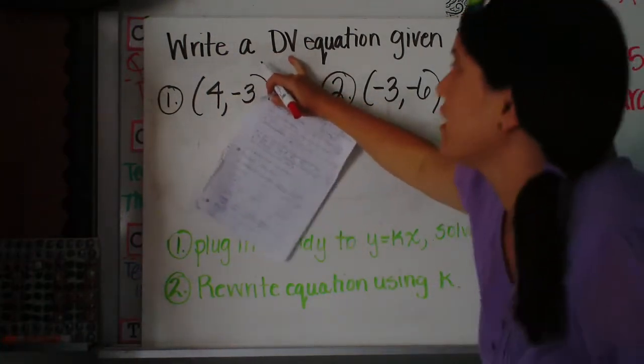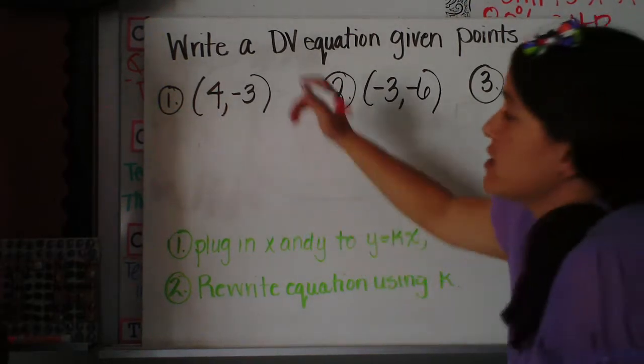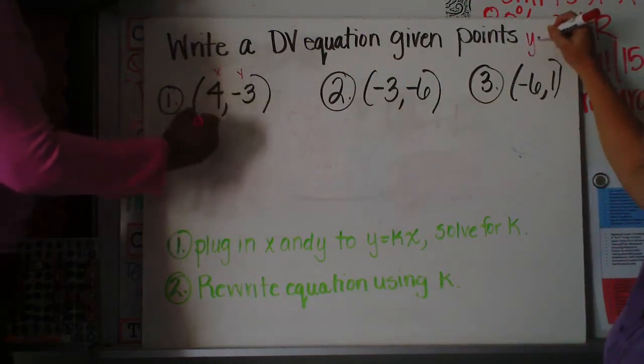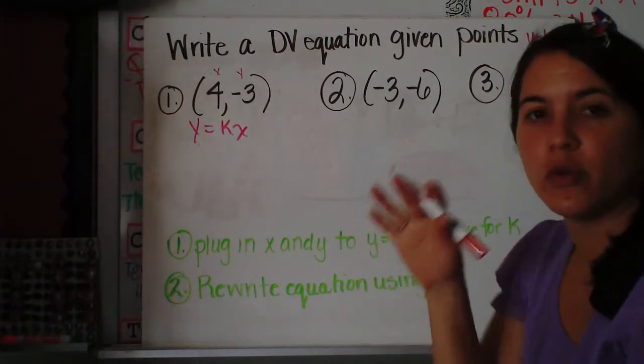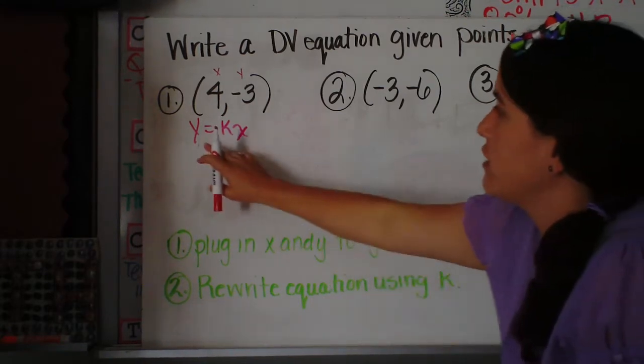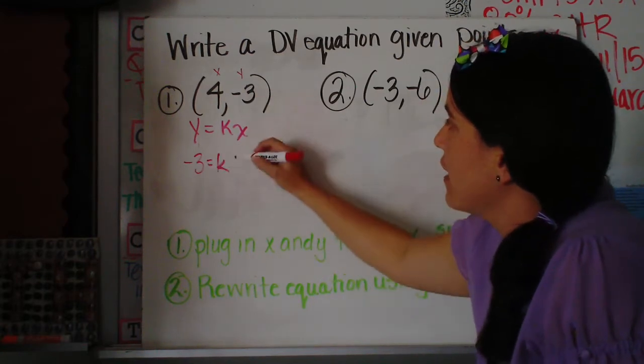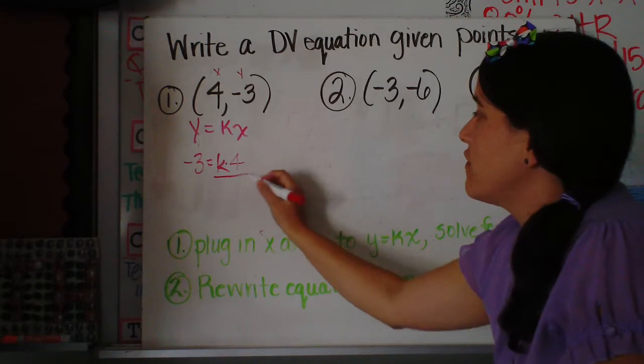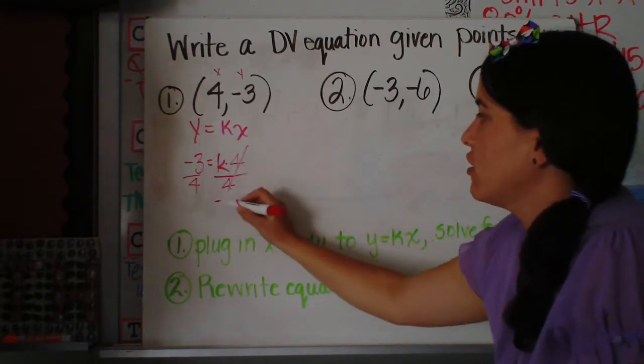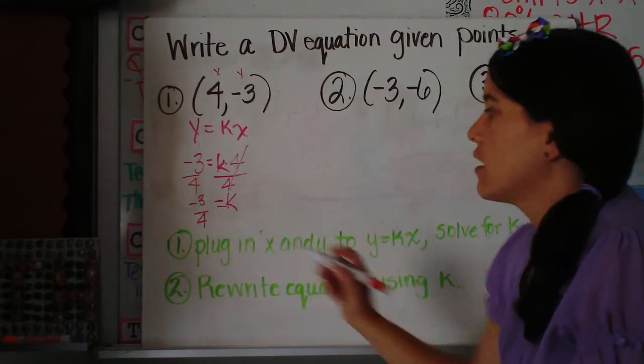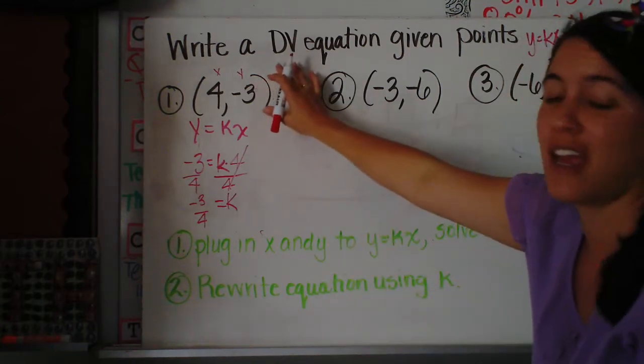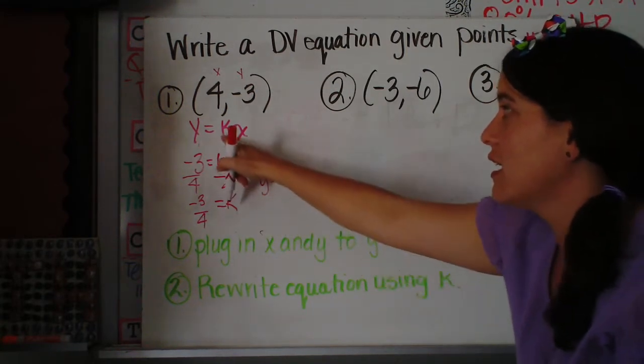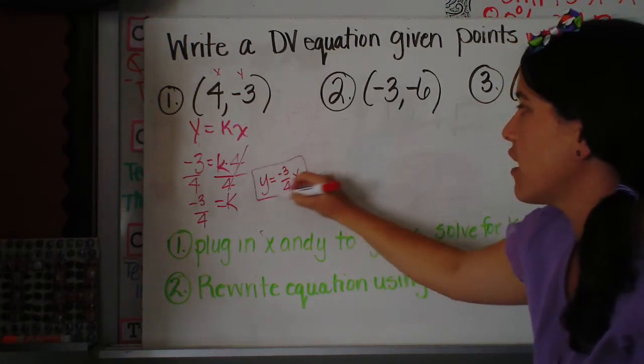So the next few questions say, write a direct variation equation given these two points. So we have a set of points. This is your x coordinate and your y coordinate. We need to figure out what the k is, because the direct variation equation is y equals kx. How we do that is we are going to substitute your values in for x and y and then solve for k. So my y value is negative 3, and my x value is 4. I want to solve for k, since this is k times 4 or 4k, we're going to divide both sides by 4, and it looks like my k value is negative 3 fourths. So that, now I've found my k. I can't stop. I mean, I can't, I'm not done, because the question says write an equation. Now that I know my k, I can write it in the form y equals k. My k is negative 3 fourths x. So there is my answer.